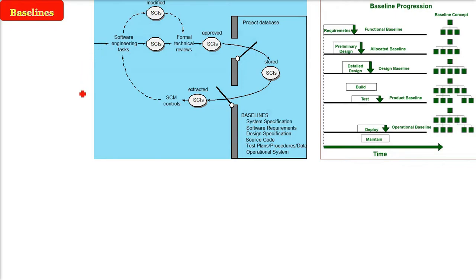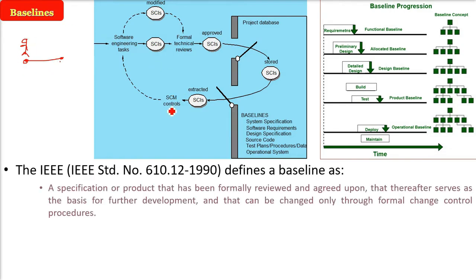Baselines. Whenever we start running for 100 meters, there is always a start line. Here we are talking about that start line — this is the baseline. The IEEE defines the baseline in standard 610.12.1990.